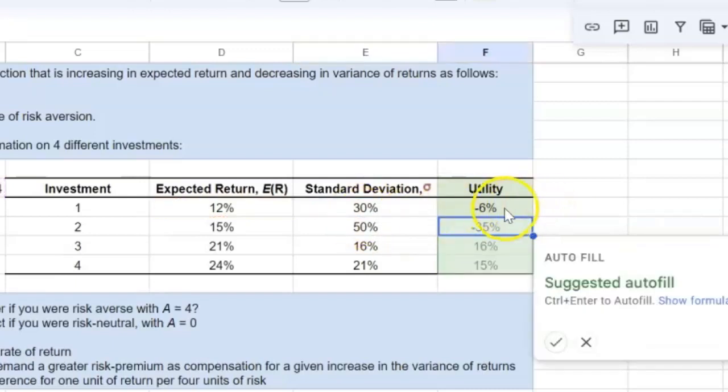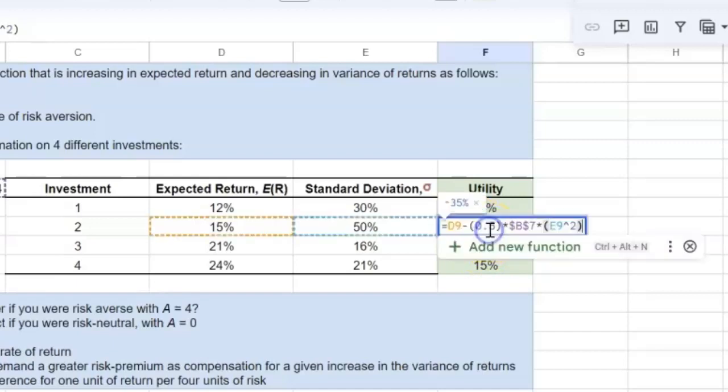And so when I do this calculation, I get negative 6%. And in fact, I can populate all the other cells using the same formula as well.